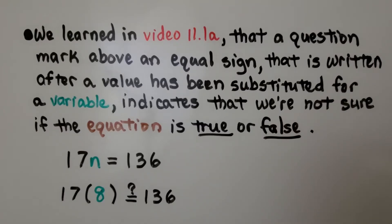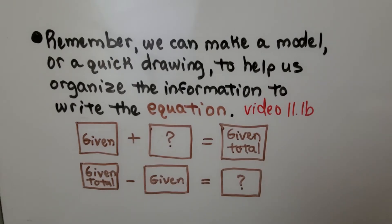We learned in video 11.1a that a question mark above an equal sign that is written after a value has been substituted for a variable indicates that we're not sure if the equation is true or false. We have 17n equals 136. If we substitute an 8 there and we're not sure if this is true or false, we write a question mark above the equal sign.